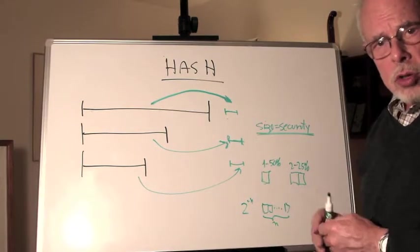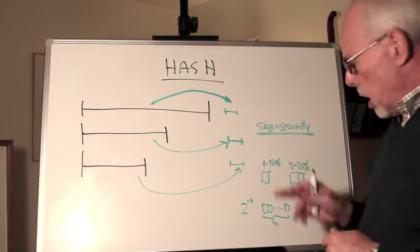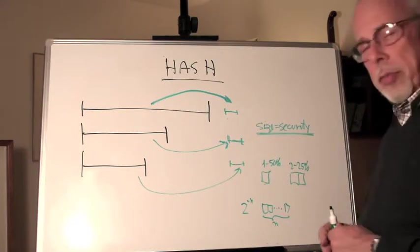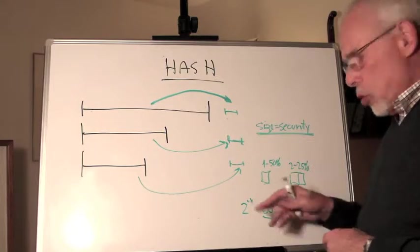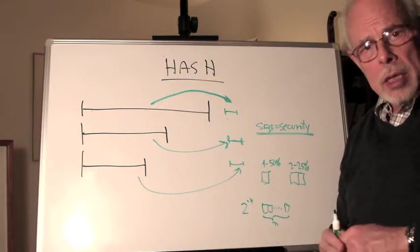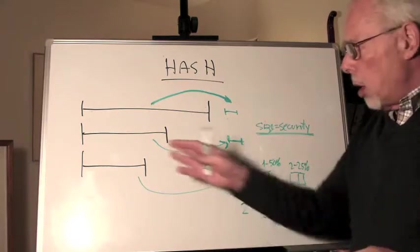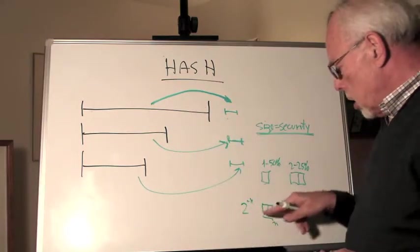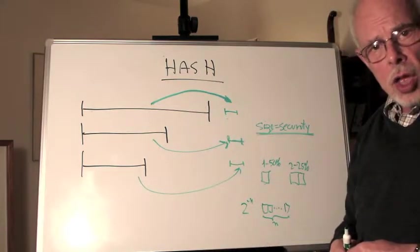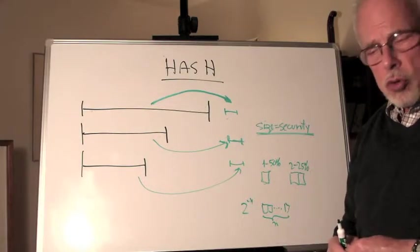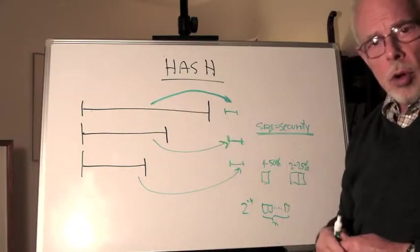If there are two possibilities, 25%. If there are n, 2 to the power of minus n is the chance for the hacker to take a random message and generate the hash that we expect him to generate if he knew what the file was.